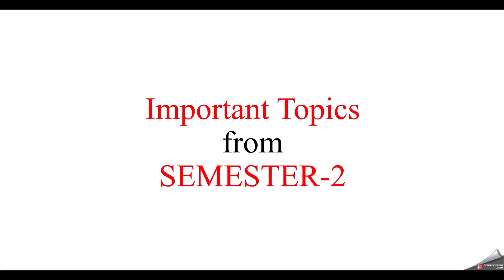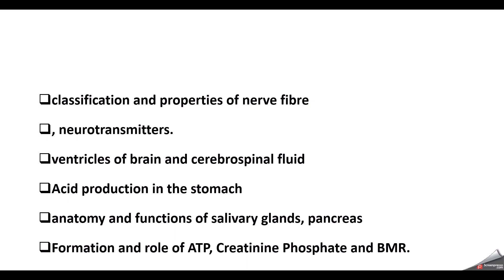HAP1 was covered in the first semester; now here is HAP2. First domain: classification and properties of nerve fibers. Nerve fibers and nerve cells, CNS — this is very important. Nerve fibers and neurotransmitters are most important. Ventricles of the brain and cerebrospinal fluid — CSF is very important. Functions and characteristics of cerebrospinal fluid will appear in the exam.